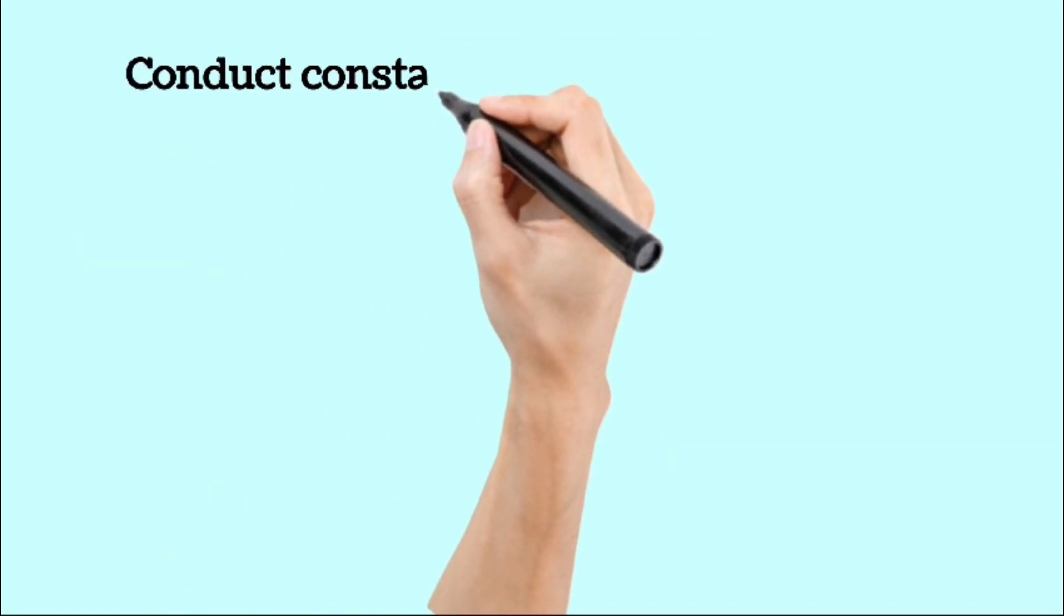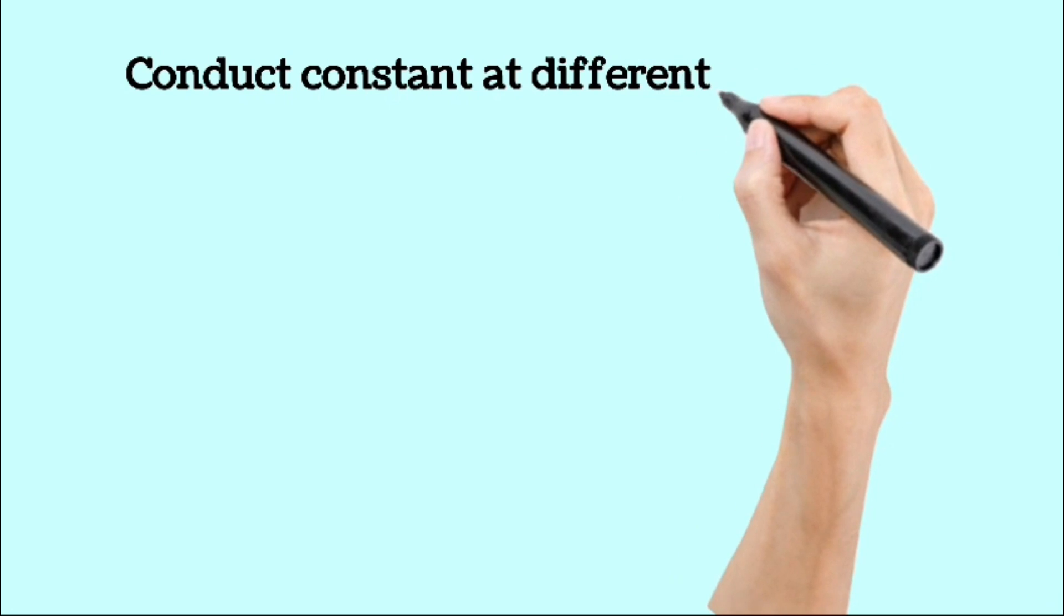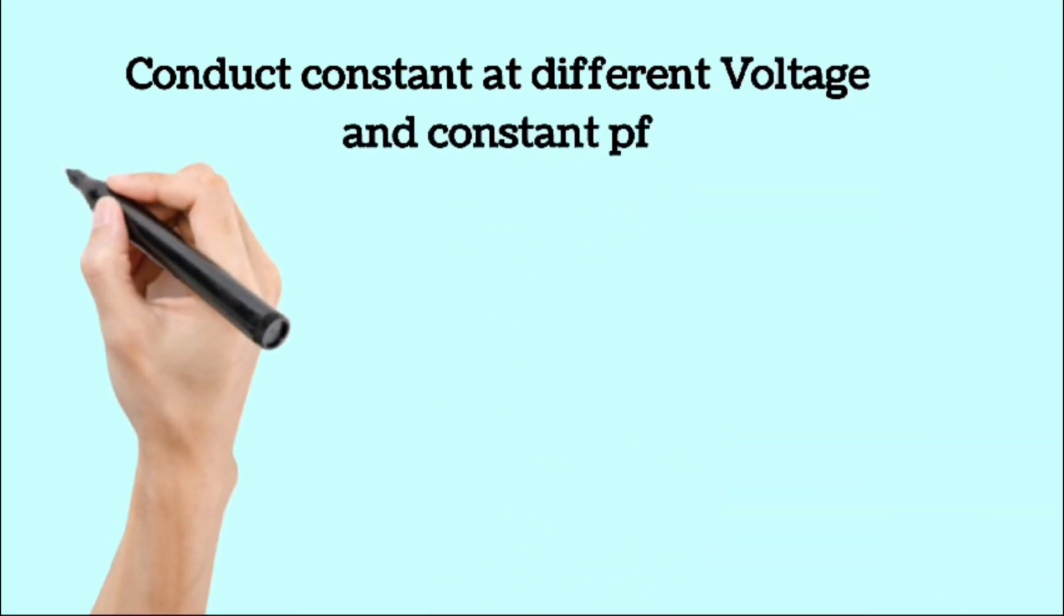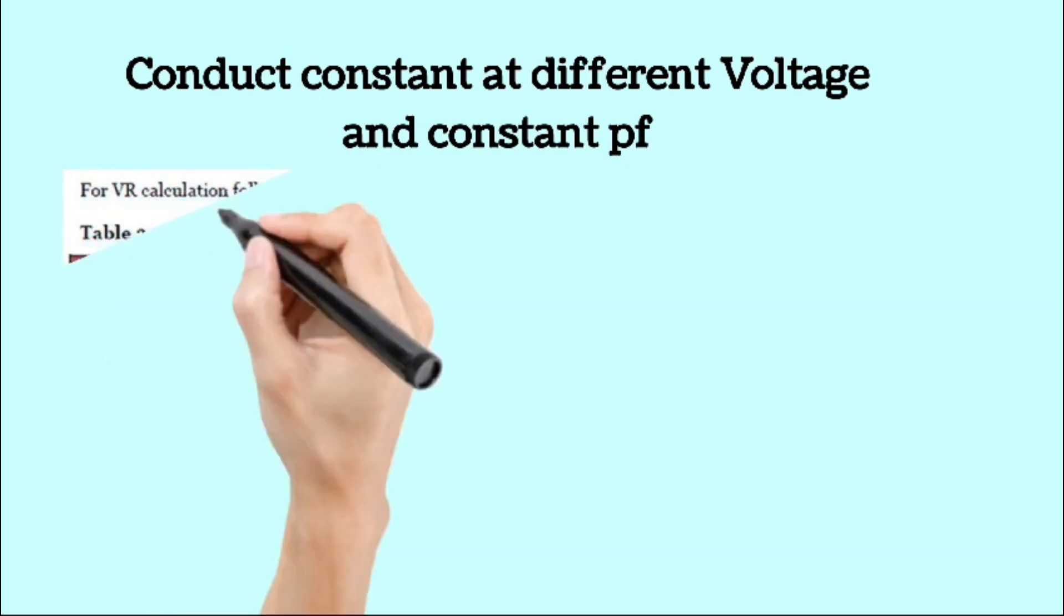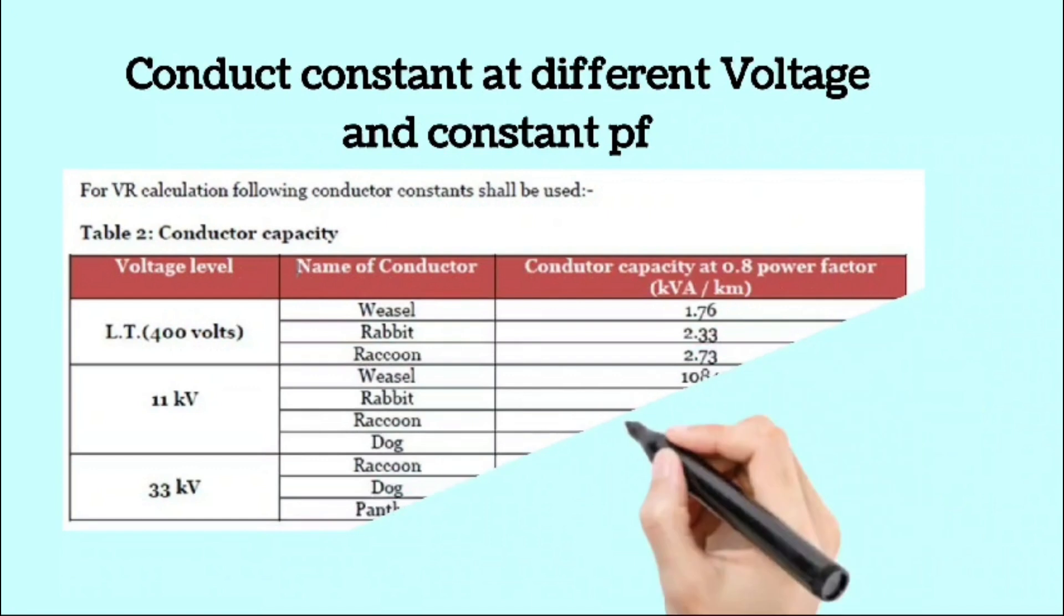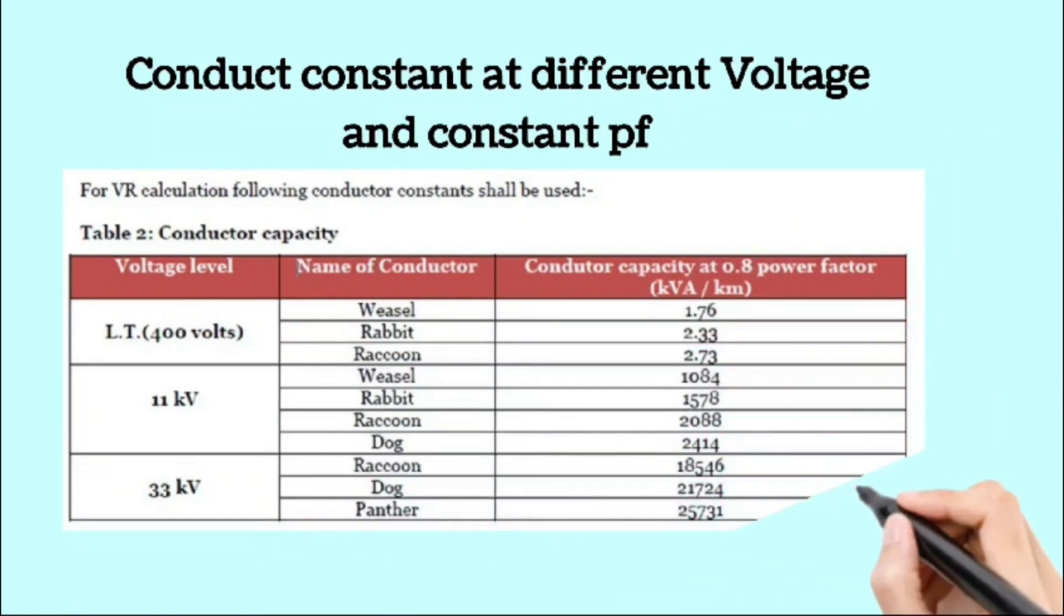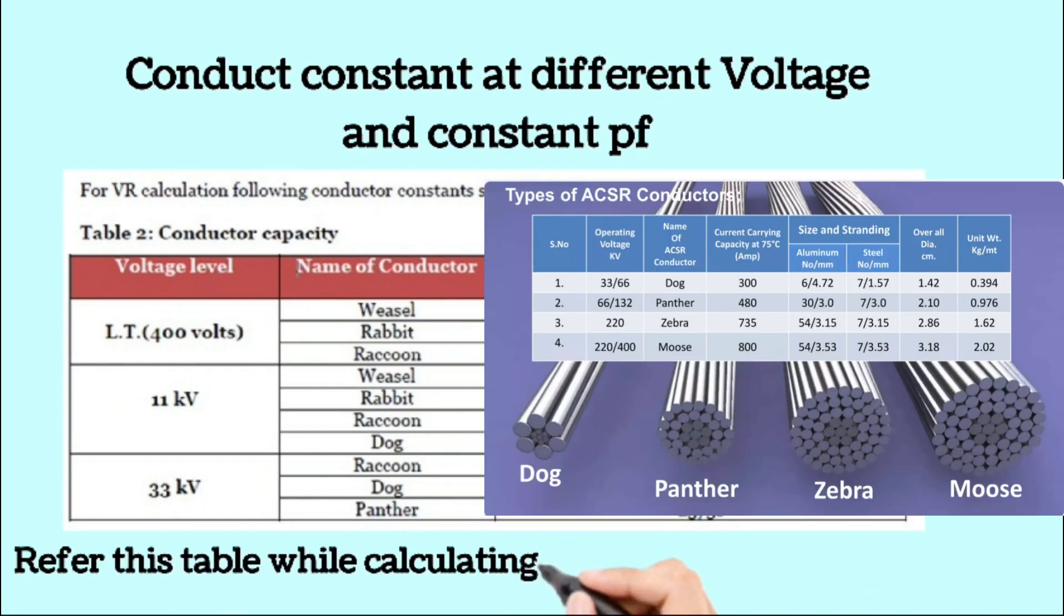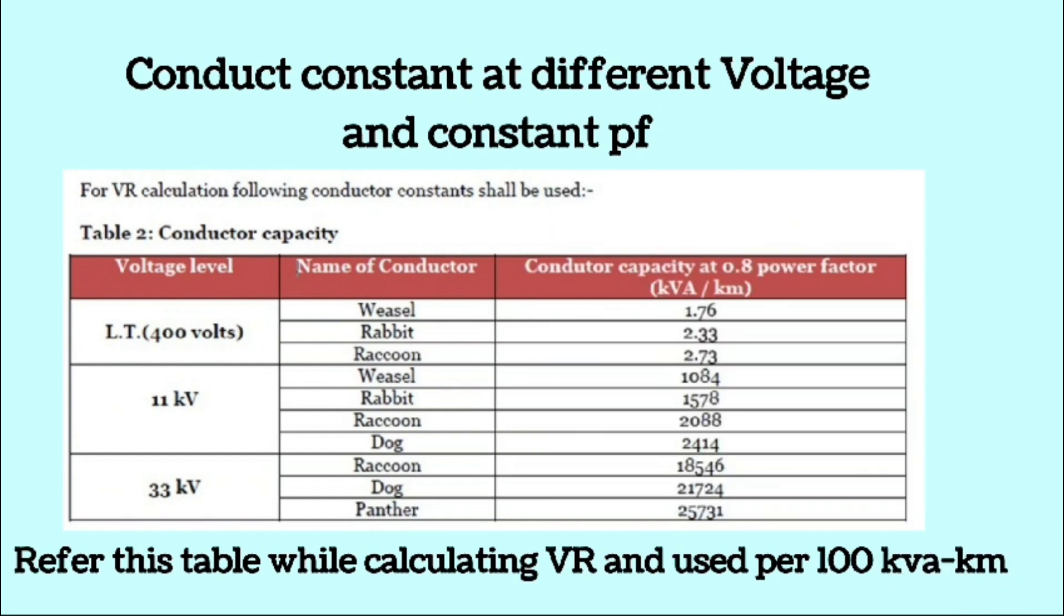In the next step, a table is provided. This table contains the values of conductor constants in kVA kilometer for different types of conductors at various voltage levels and a constant power factor of 0.8. For future reference, this table should be referred to when calculating voltage regulation. It is important to note that the regulation constant depends on the current carrying capacity of the conductor and the length of the line.